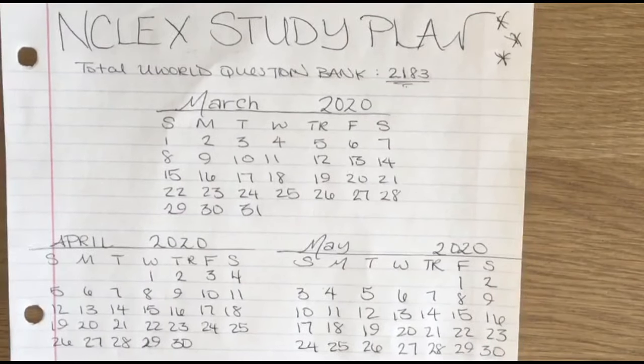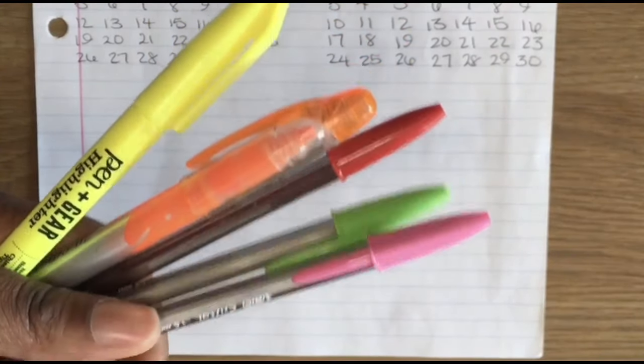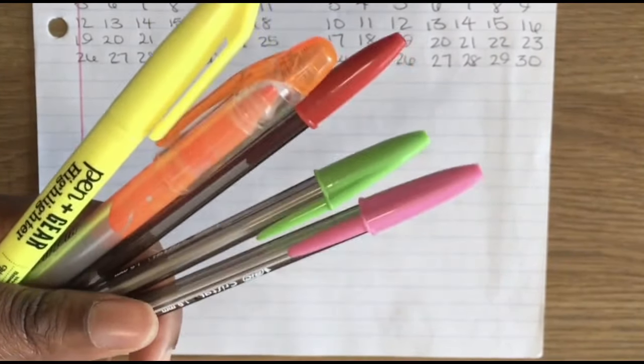And this is how it should look. So next you want to use your highlighters and your pens and we're going to make a study key. The study key is going to let you know what the colors represent.